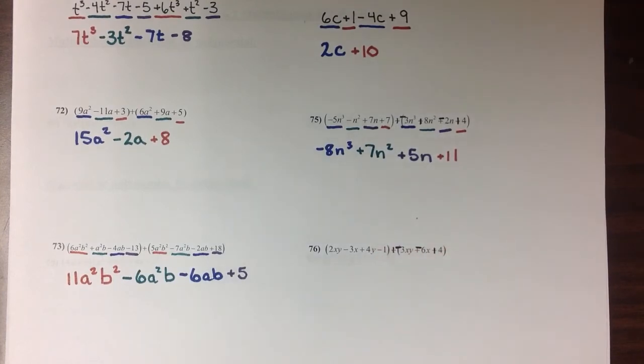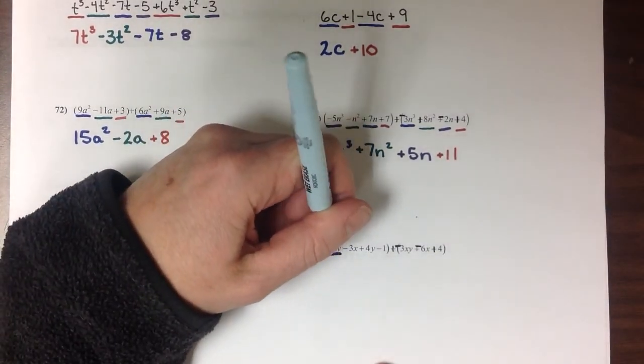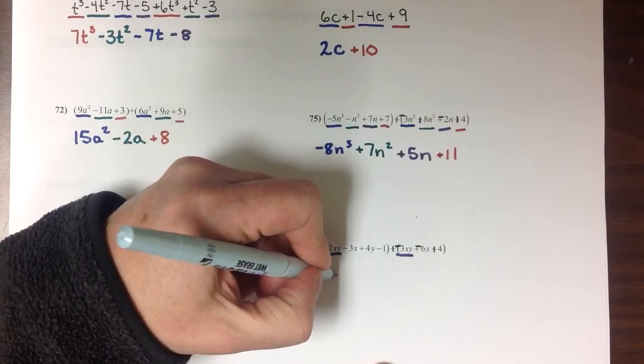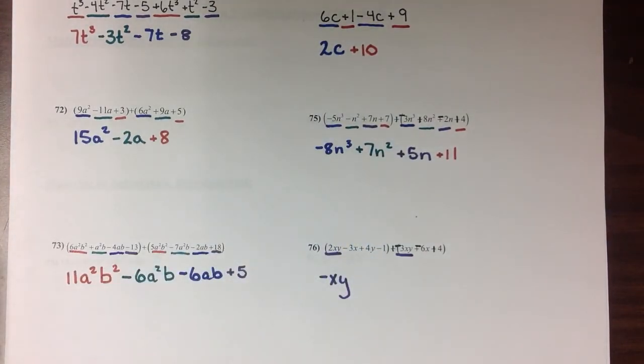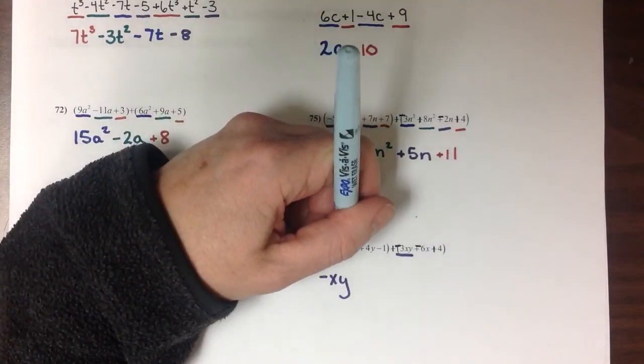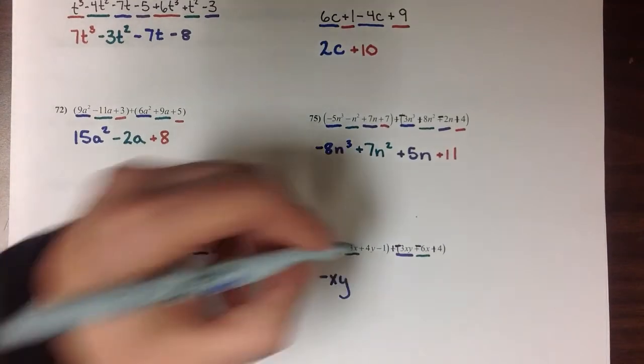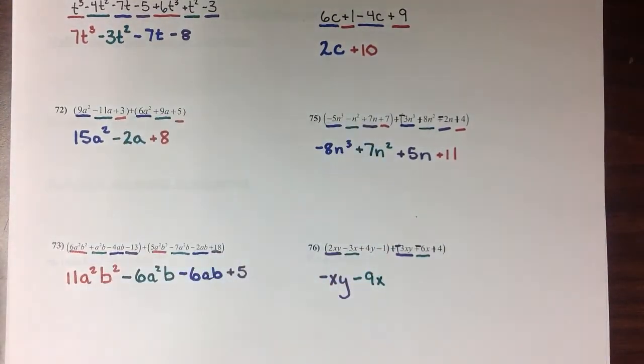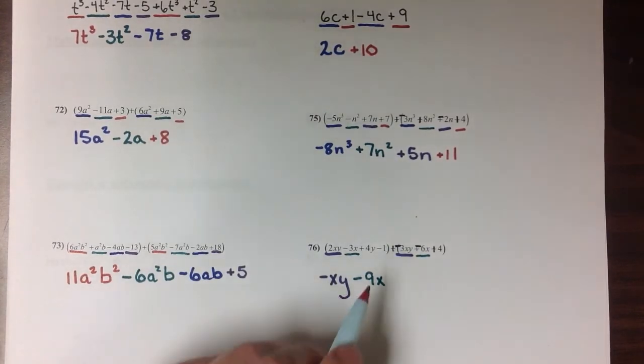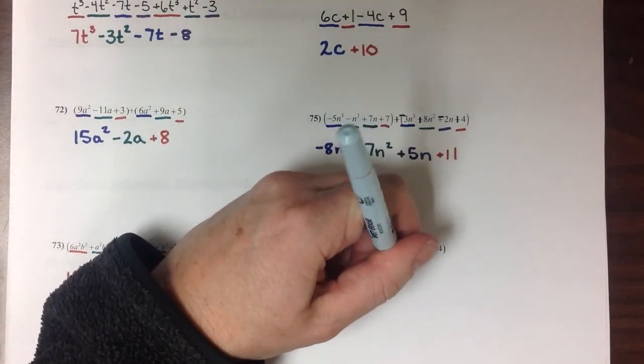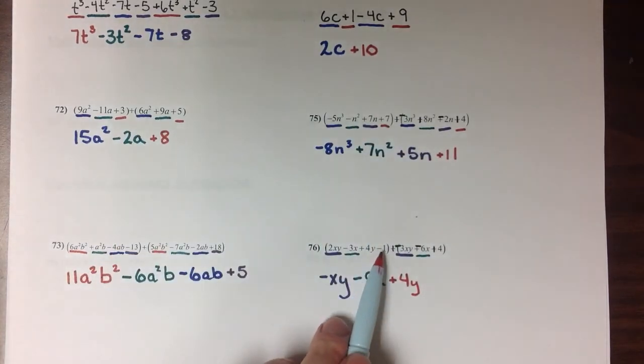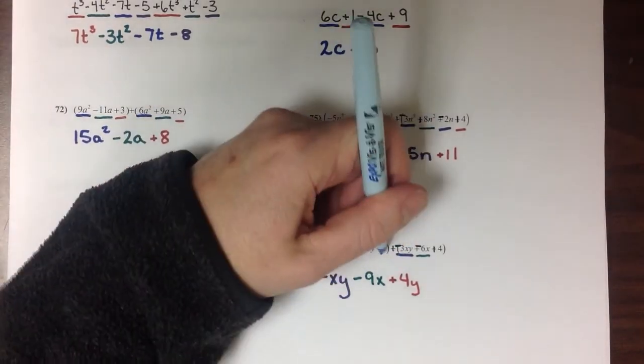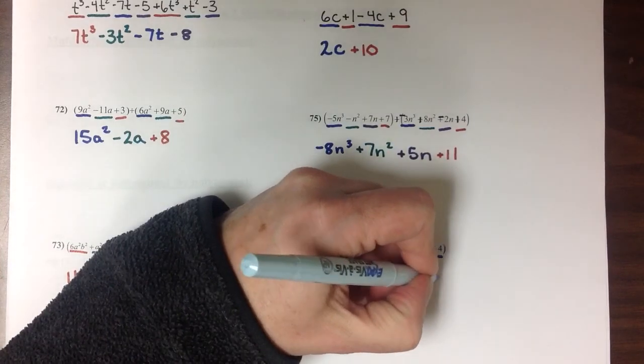Now it's an addition problem. Now that that negative sign has been distributed through, so I can just combine my like terms. 2xy's minus 3xy's would leave me with a -xy. And -3x minus 6 more x will leave me with a -9x. Plus 4y. This polynomial doesn't have a -4y, so we'll just bring that 4y down. And then a -1 and a positive 4 for my constant terms will leave me with a total of positive 3.